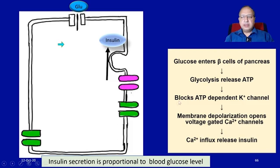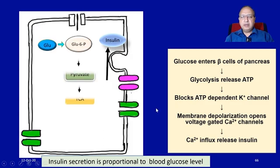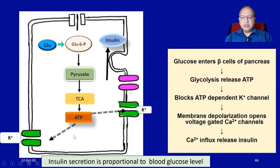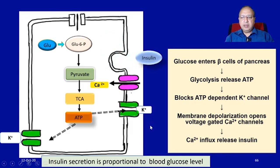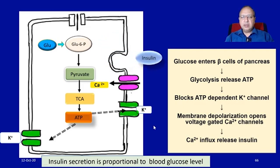Glucose enters the beta cells of the pancreas and causes stimulation of glycolysis. The glycolytic activity causes the release of ATP. This ATP causes blockage of the ATP-sensitive potassium channels, leading to depolarization within the cells. There will be movement of calcium ions — calcium influx — and all the vesicles that store insulin will release insulin from the beta cells in response to the increase in glucose entry into the cells.